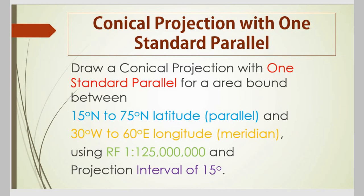The first thing is the conical projection, for which we need to know what a projection is. Simply, projection is the method to convert a three-dimensional earth — because earth is not a flat-shaped body, it is a three-dimensional body just like a ball — onto a flat surface, which is the map. That change from three-dimensional ball-like earth onto the flat map is called projection.